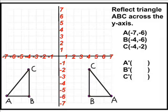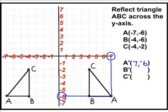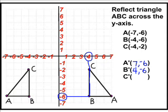Now let's write down the ordered pairs of the new points. Point A is located at positive 7, negative 6. Point B is located at positive 4, negative 6. Point C is located at positive 4, negative 2.